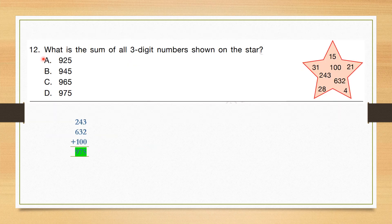Question number 12: What is the sum of all three-digit numbers shown on the star? The three-digit numbers are 243, 100, and 632, and the sum of these three numbers is 975. So the correct answer is option D.